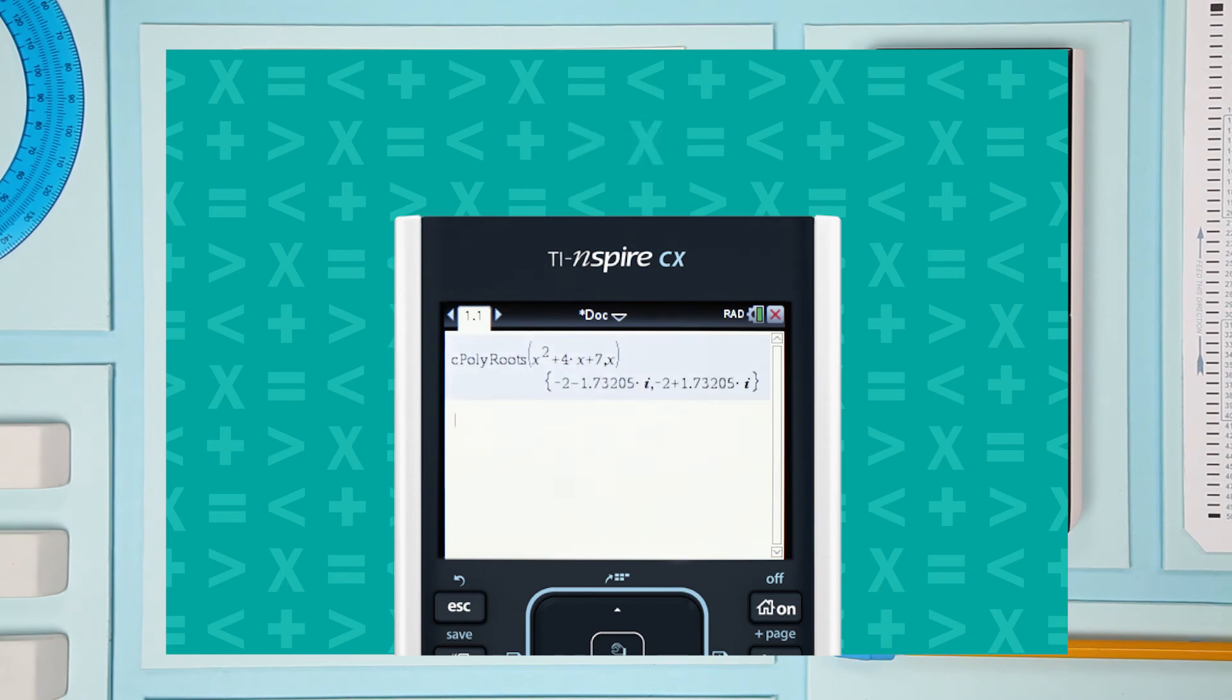This is different. Remember when I said select complex in the menu? Here's why. The solutions in this example are complex numbers. And the coefficient of i is irrational. So it can't be converted to fractions.